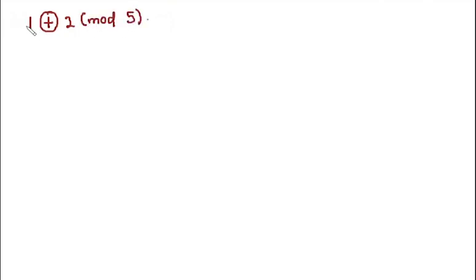The first step to do the addition of these two values is to simply say equal to 1 plus 2. So 1 plus 2 is 3 in modulo 5. Now the next step is to look at the number we have and the modulus. If the number we have is less than the modulus, that means the answer we have is our answer.